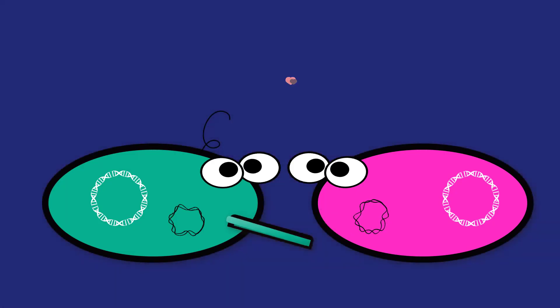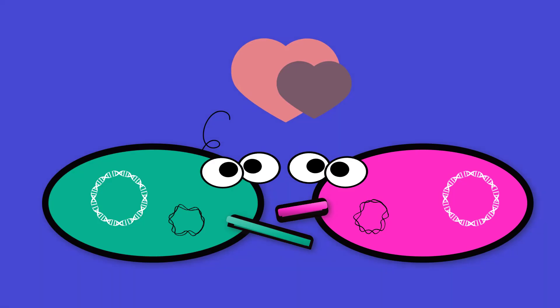When the bacteria receives its copy of the F-plasmid, it then has the ability to now create its own sex pilus and can go give copies of its F-plasmid to another bacterium.